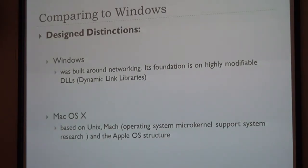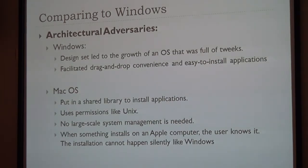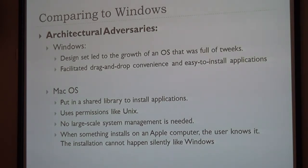Comparing between Windows and Mac, about the design distinction: Windows was built around networking, and its foundation is highly modifiable DLLs — Dynamic Link Libraries. Windows design led to the growth of an OS that is full of flexibility; for example, you can overclock or make some changes on Windows. Besides, Windows also has drag-and-drop convenience and easy application installation.